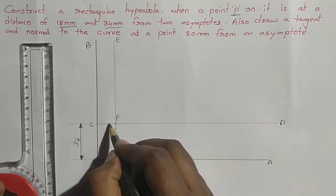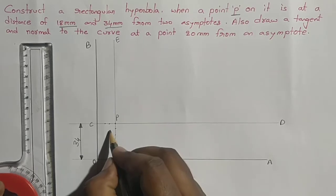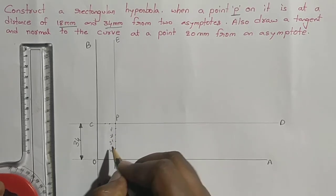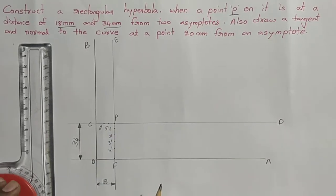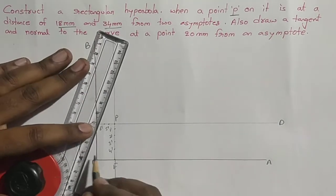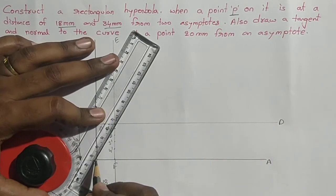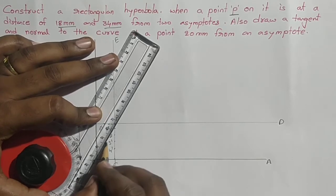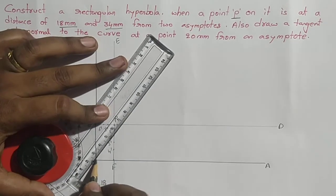Name them as 1 dash, 2 dash, 3 dash, 4 dash. Next, 5 dash and 6 dash. Join O and 1 dash and extend up to CD with thin lines. Similarly, O to 2 dash, extend up to CD.